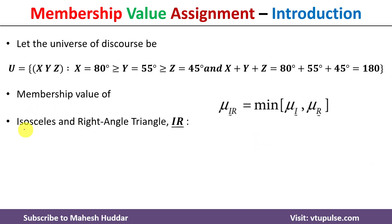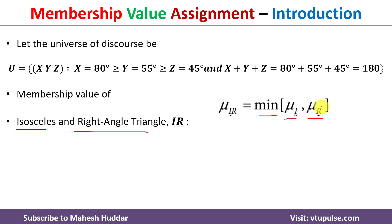Next is the membership value of the isosceles and right angle triangle — fuzzy set IR. The membership value for set IR is equivalent to the minimum of the membership value of the isosceles triangle and the membership value of the right angle triangle. We have already calculated both of these values.